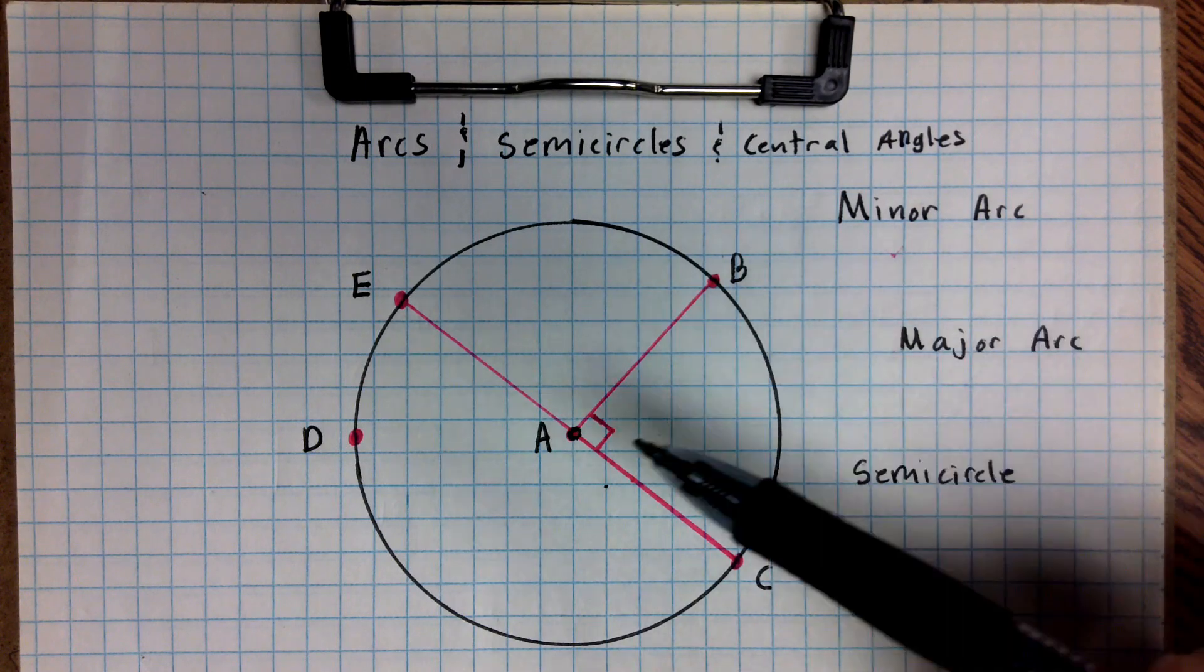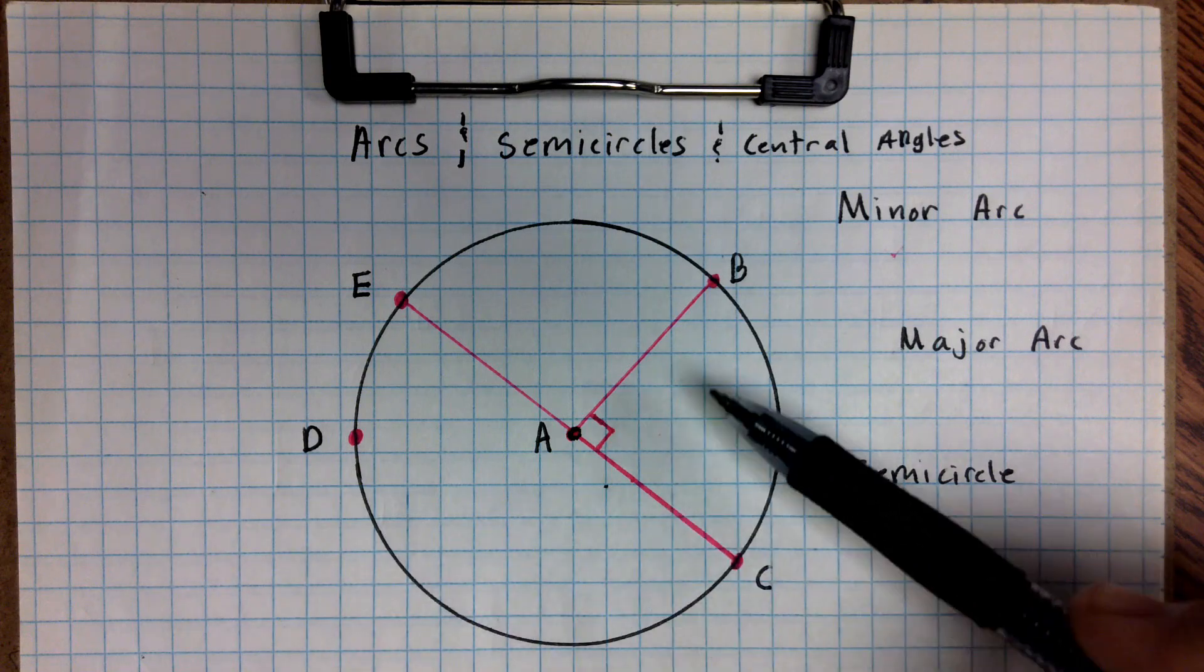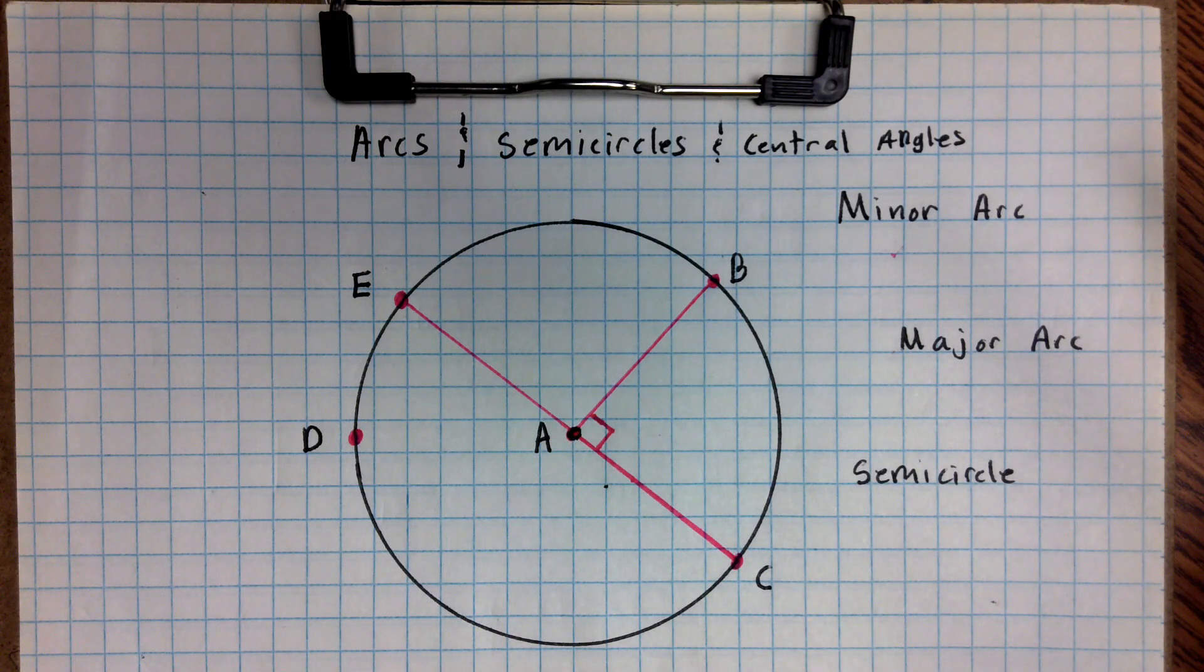In this video, we're going to be looking at arcs, semicircles, and central angles. Before we try to solve one of these and define what a minor arc, a major arc, or a semicircle is, let's go ahead and look at some basics about the circle and its components.